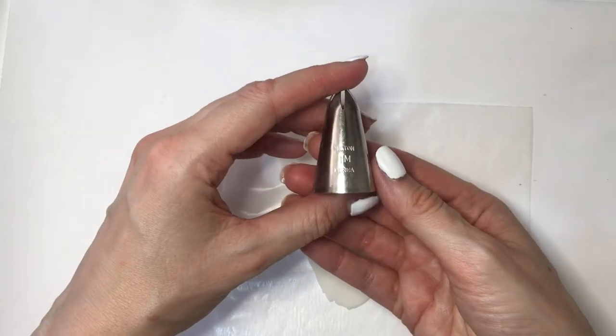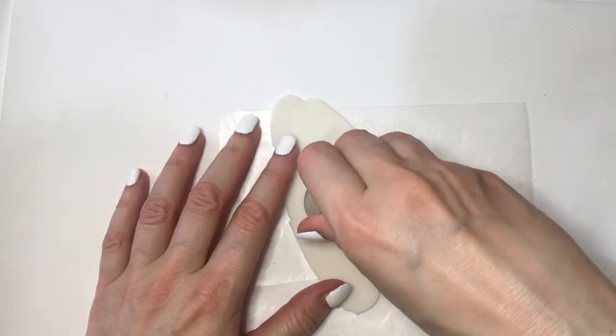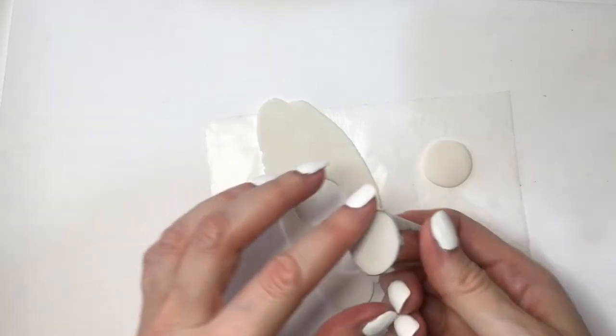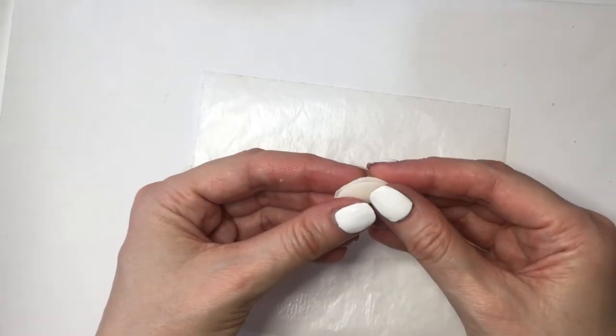I'm going to be using this baking tool—it's my piping tool, Wilton 1M. This is a cookie cutter just to cut two circles. I'm going to be taking one of those circles and folding it like a mini taco.